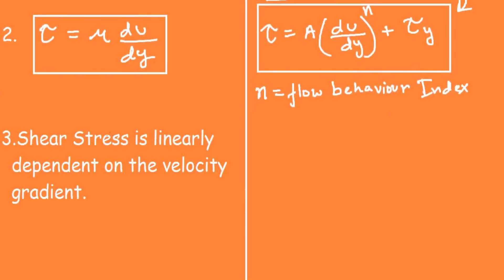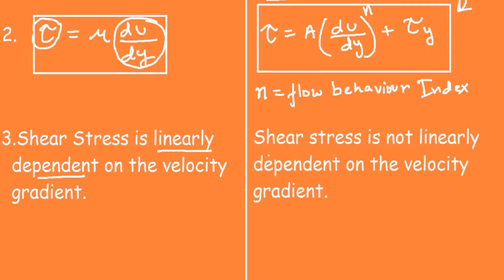The third point: for Newtonian fluids, the shear stress is linearly dependent on the velocity gradient. But for non-Newtonian fluids, the shear stress is not linearly dependent on the velocity gradient, because the term raised to the power n — the flow behavior index — prevents linear dependence.